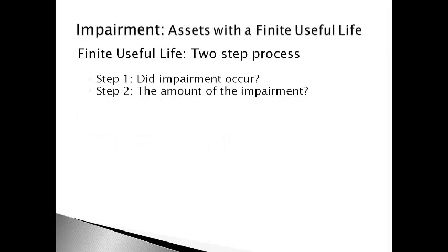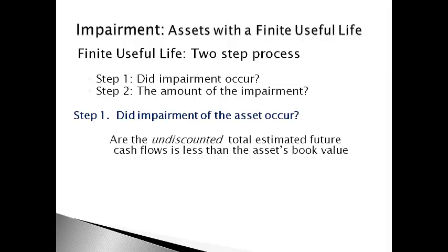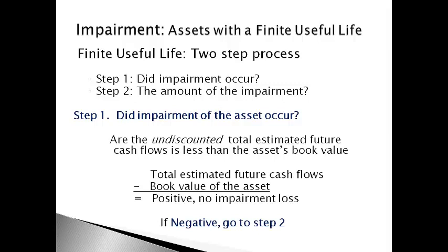GAAP requires different asset types to use different methods for determining impairment. Long-term assets with a finite useful life are tested using a two-step process. Step 1 determines if impairment is likely to have occurred: an impairment loss is likely when the undiscounted total estimated future cash flow is less than the asset's book value. If total estimated cash flows are greater than book value, there is no impairment. If less than book value, impairment is likely and Step 2 is required.